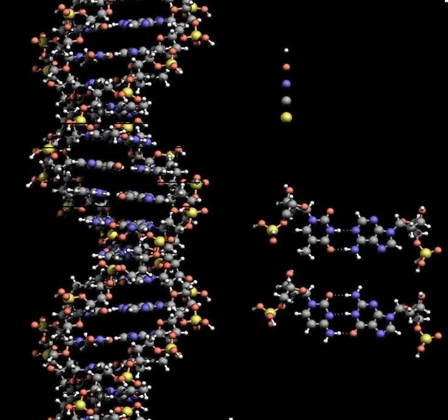Topoisomerases are enzymes with both nuclease and ligase activity. These proteins change the amount of supercoiling in DNA. Some of these enzymes work by cutting the DNA helix and allowing one section to rotate, thereby reducing its level of supercoiling, and the enzyme then seals the DNA break. Other types are capable of cutting one DNA helix and then passing a second strand of DNA through this break before rejoining the helix. Topoisomerases are required for many processes involving DNA, such as DNA replication and transcription. Helicases are proteins that are a type of molecular motor. They use the chemical energy in nucleoside triphosphates, predominantly adenosine triphosphate, to break hydrogen bonds between bases and unwind the DNA double helix into single strands. These enzymes are essential for most processes where enzymes need to access the DNA bases.